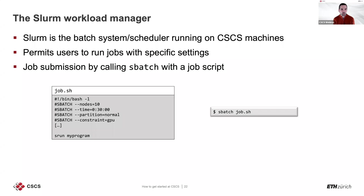Now about job submission and monitoring: the SLURM workload manager is the submission system on CSCS machines that allows you to run on compute nodes with specific settings. The main command to submit a script is 'sbatch'. You need to prepare a script like job.sh starting with #!/bin/bash, followed by SBATCH directives specifying options like number of nodes, time, partition (the default is 'normal'), and constraint (gpu or mc). Then use the 'srun' command to run your application on the compute nodes.